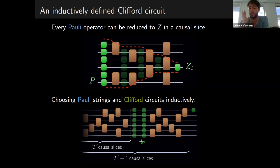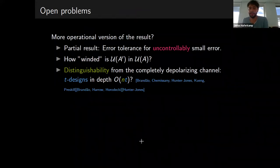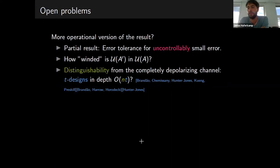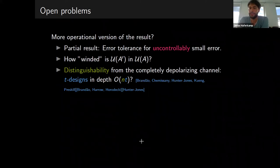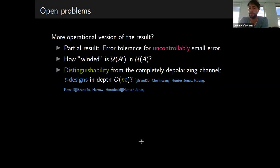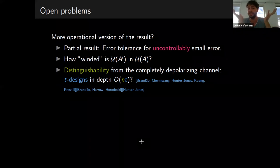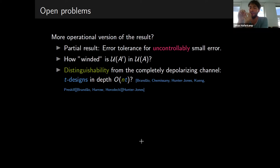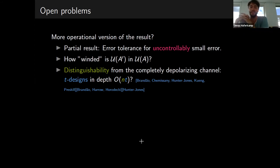What have we achieved? A minimal version — with capital M — of what Brown and Susskind conjectured. The first thing I would like to improve in the future is making it error robust. Currently we take exact circuit implementation, which means that arbitrarily close to the identity there are unitaries with exponentially large circuit complexity. For anyone who cares about implementation or practicality, this is merely a mathematical result. We do have a partial result — we can show linear growth for a robust notion of circuit complexity — but the problem is we don't know how the error scales with n. Making this more robust amounts to figuring out how winded or curved these spaces U(A) are.